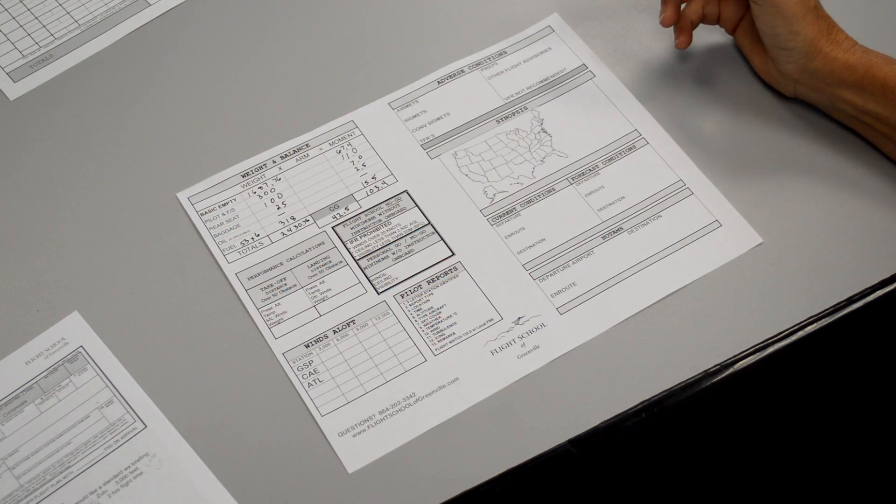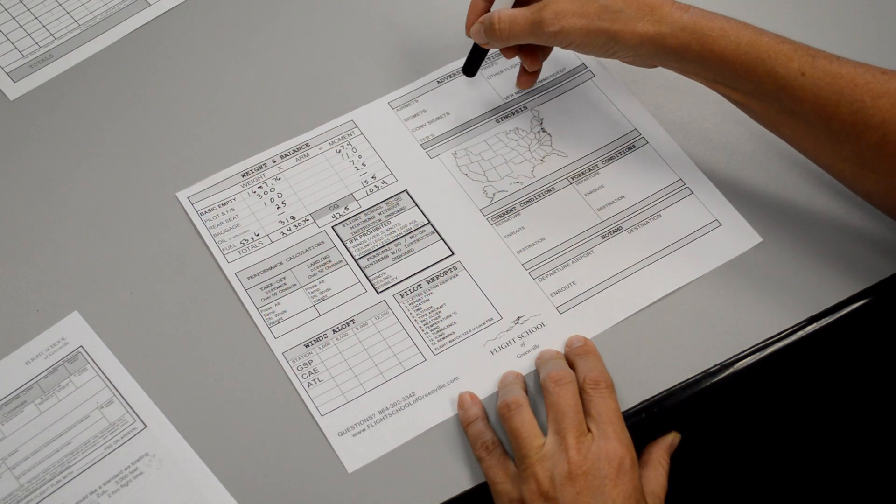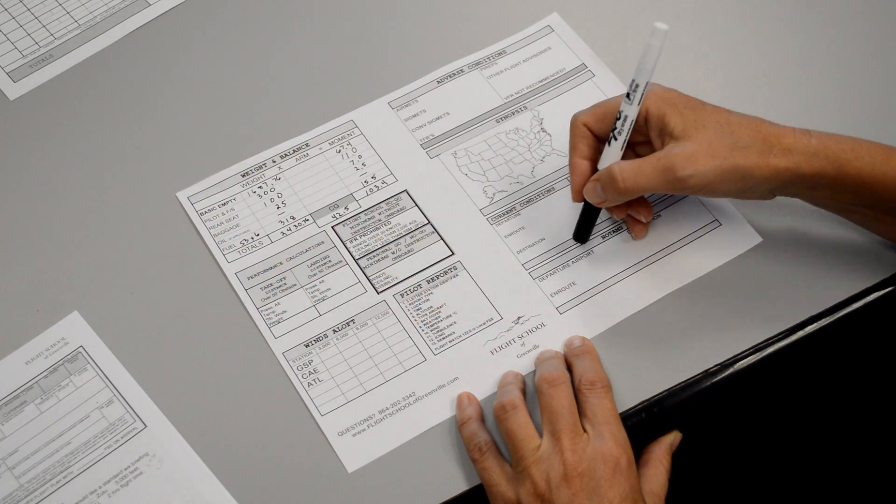Our second step to making out our cross-country flight plan is going to be to obtain the weather. So we're going to call the flight service station at 1-800-WX-BRIEF, give them our information, and then the flight service station will give us all of our information about the weather.